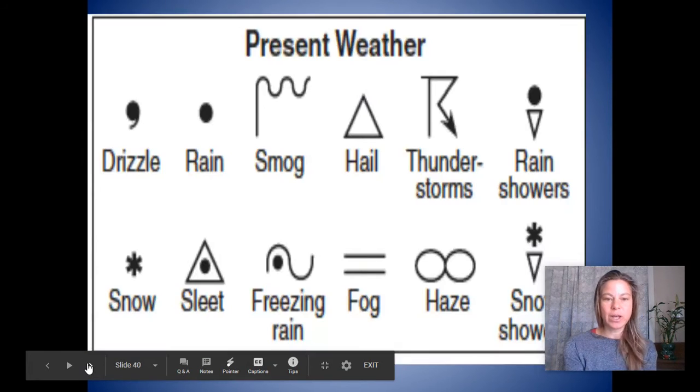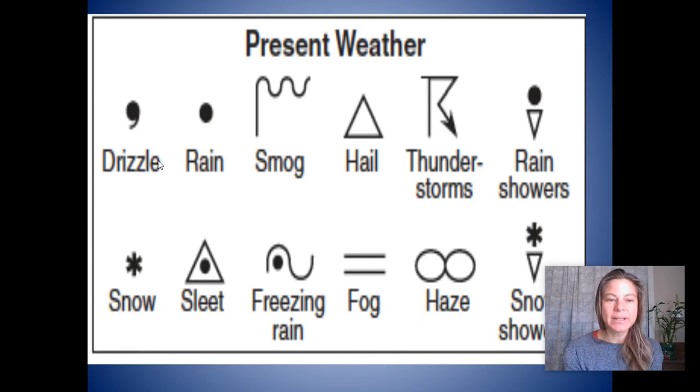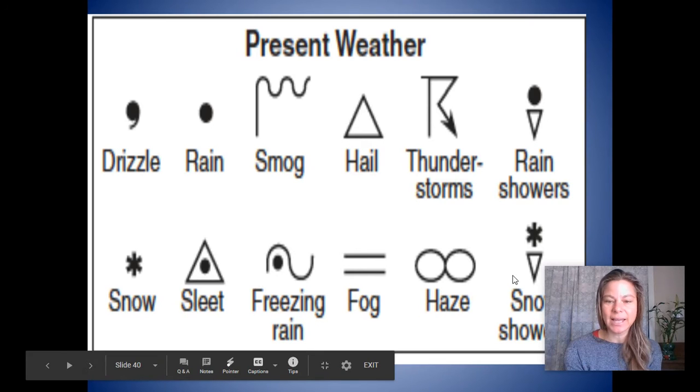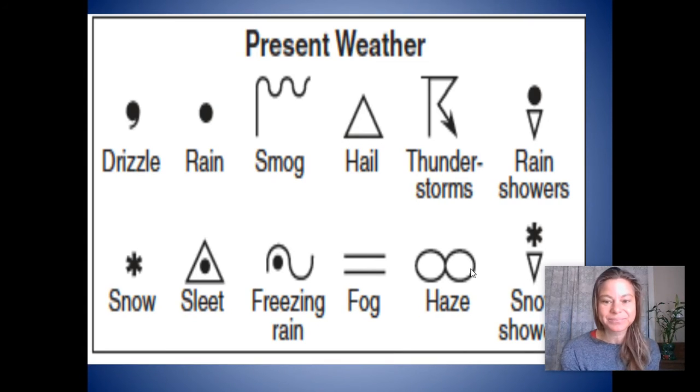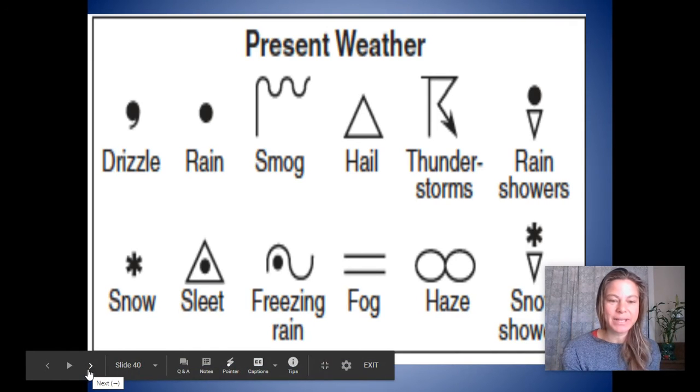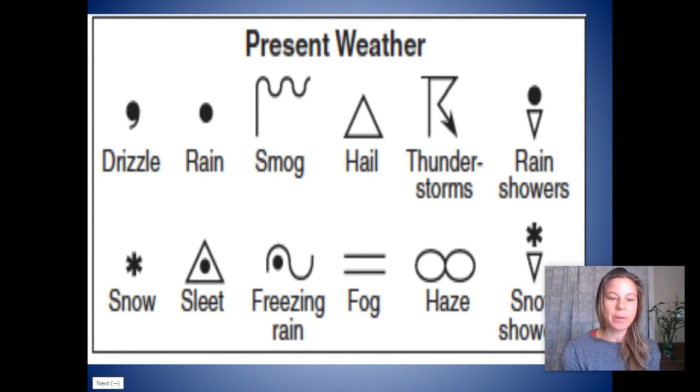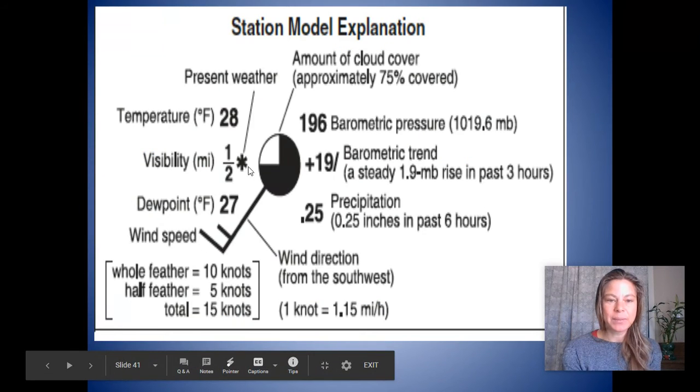So then on this weather station, we also put the present weather. And I love these symbols. They're kind of look like alien communication symbols. This little doodad is drizzle. A dot is rain. This little funny guy is smog. Triangle for hail. Thunderstorm's pretty cool, I like that. Rain showers, snow, sleet, freezing rain, fog, haze, and snow showers. That's the one for school closing. Snow showers, we always look forward to that one. This is on your reference table. You do not have to memorize this. And they place the present weather between the temperature and the dew point. That's where it goes on the weather station.